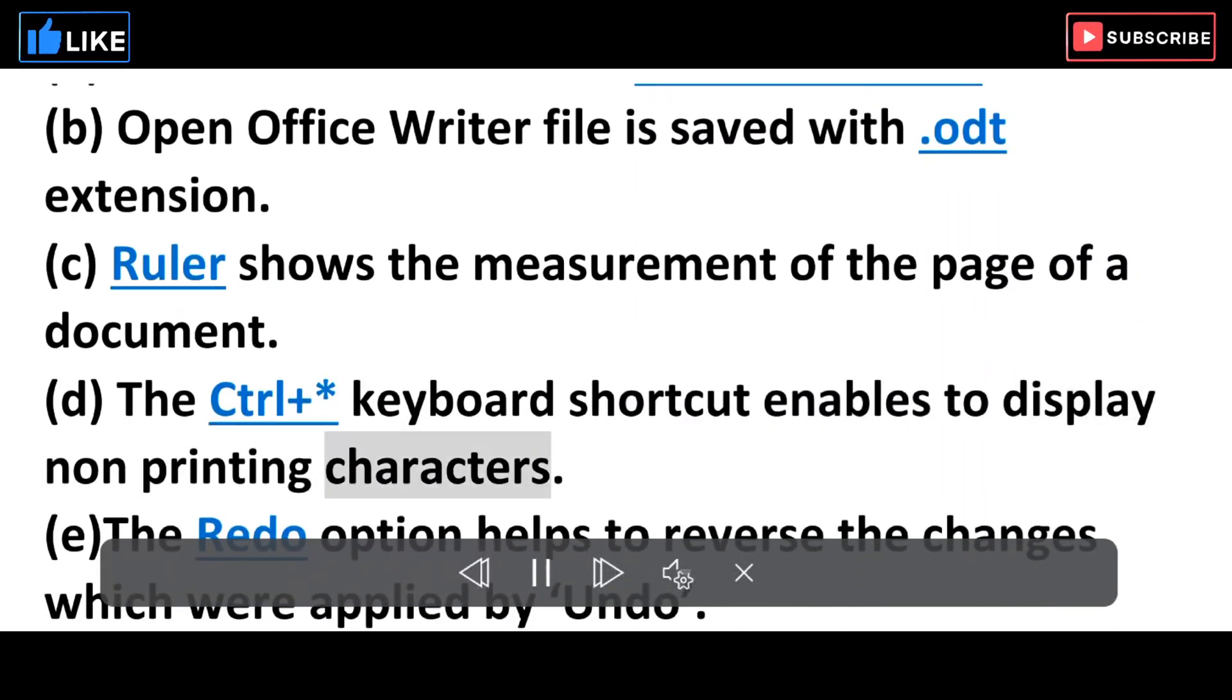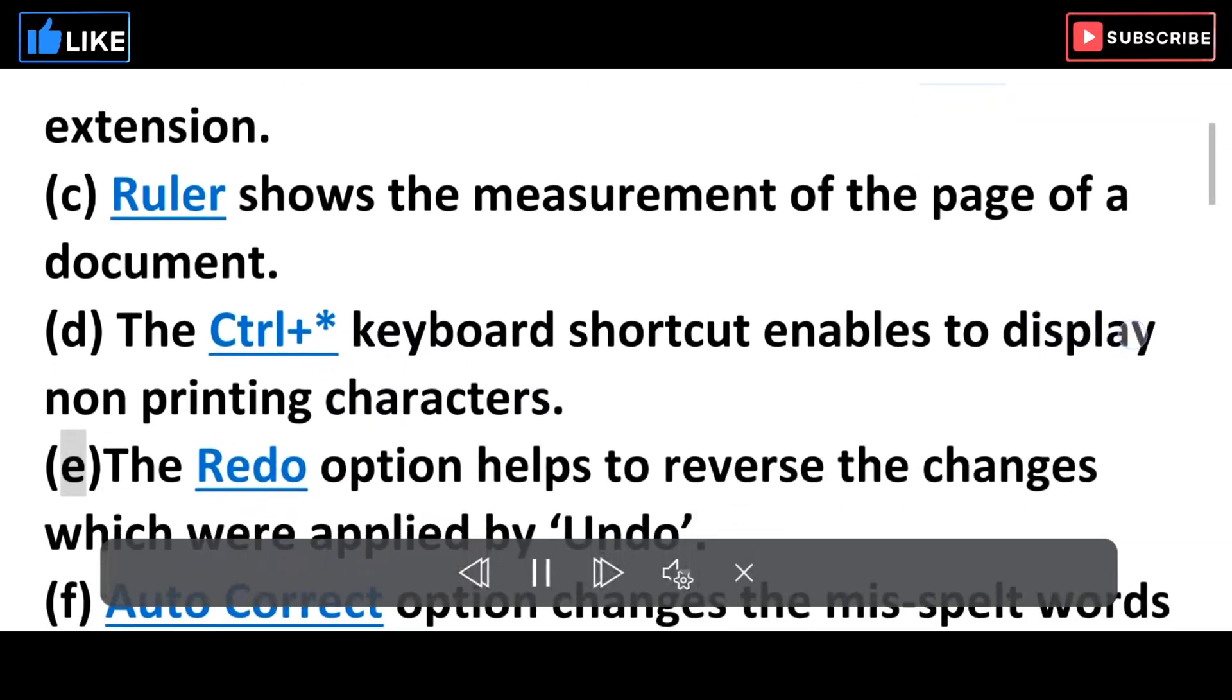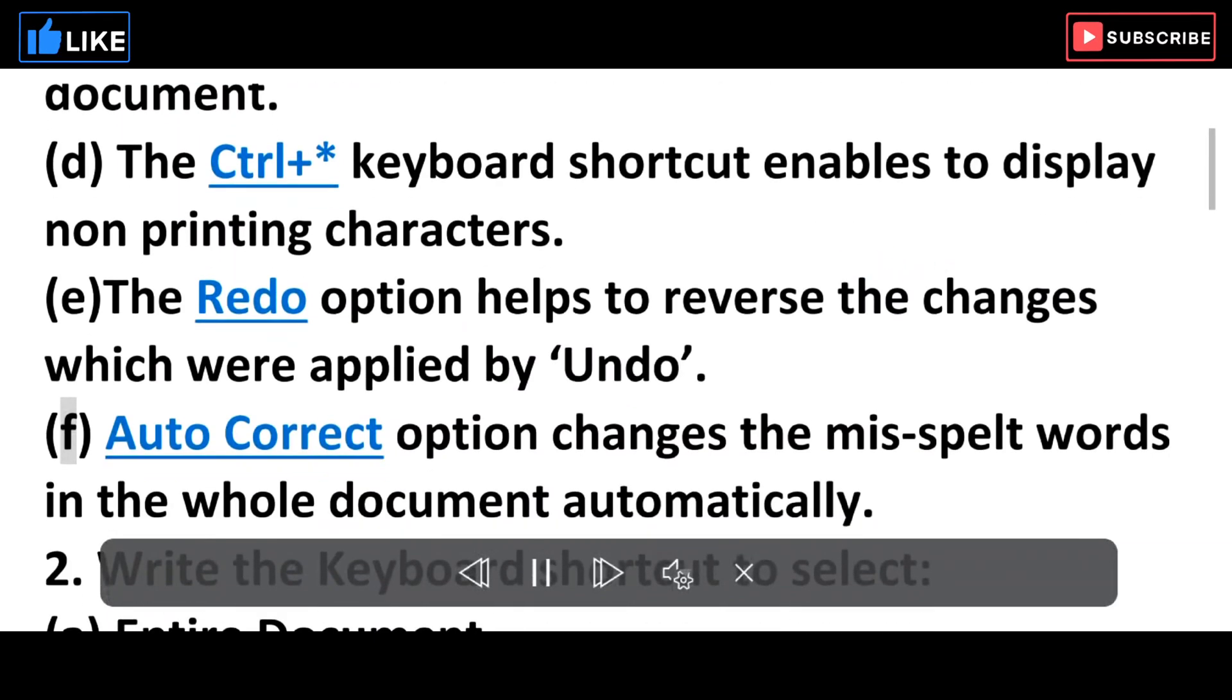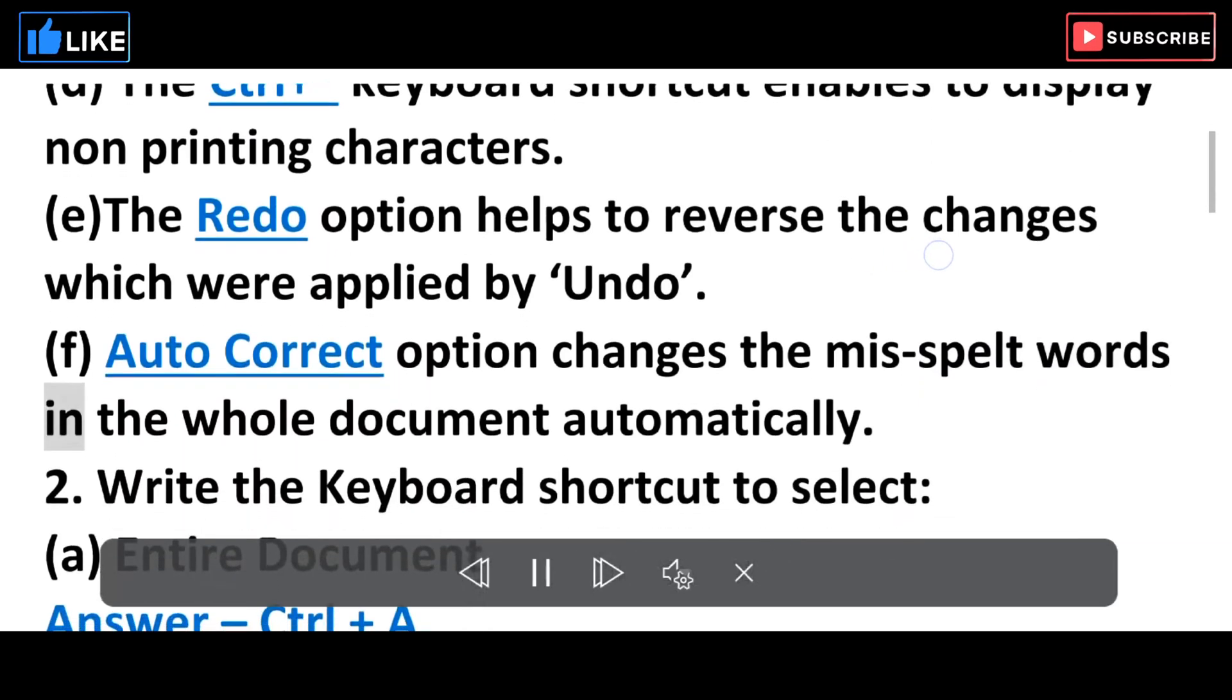E. The Redo option helps to reverse the changes which were applied by Undo. F. Auto Correct option changes the misspelt words in the whole document automatically.